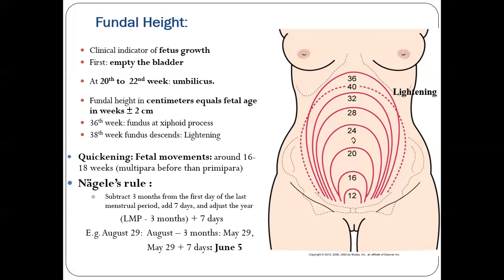At 36 weeks, fundal height is at the xiphoid process. At 40 weeks it should be a little bit lower because the uterus expands side to side. At 38 weeks, fundal height should descend — this is called lightning. Quickening is when the baby's first movement is felt by the mother, around 16 to 18 weeks.